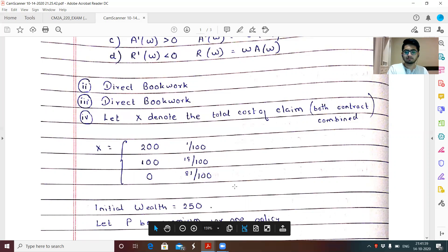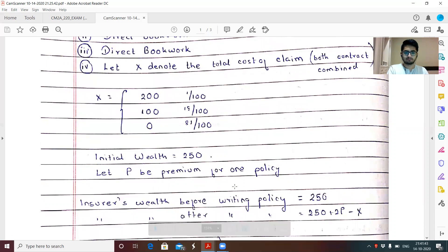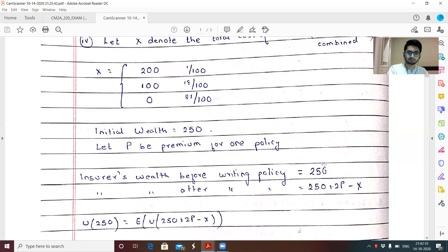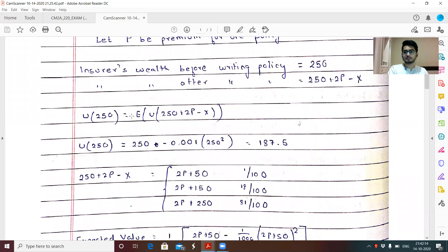So each policy in the question, it has been mentioned that a claim of a hundred would be there. And there's a 10% probability of a claim, both the claims are identical and independent. So first is both of them claim individually, they have probability of 10%. So both of them make a claim would be 10% into 10% that comes out to be 0.01. I prefer to write it one by a hundred. You could have also write 0.01, whichever way you're comfortable. One of them make a claim. So the probability of it would be 2C1, 0.9 into 0.1. The first can make a claim. The second cannot. The first cannot make a claim. The second can. And finally, none of them make a claim. So the amount is zero with probability 0.9 square, which is 81 by 100. So this is my random variable denoting the total cost of claim for the insurance company. Initial wealth is given to be 250. Let us denote P to be the premium for one single policy.